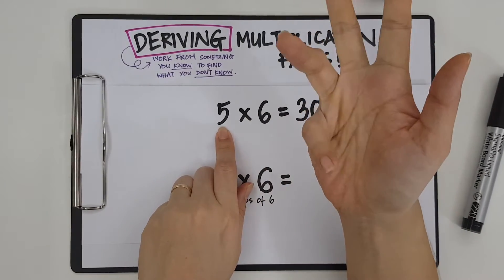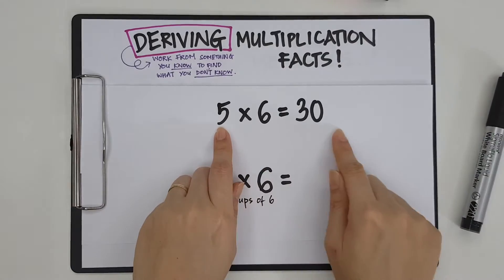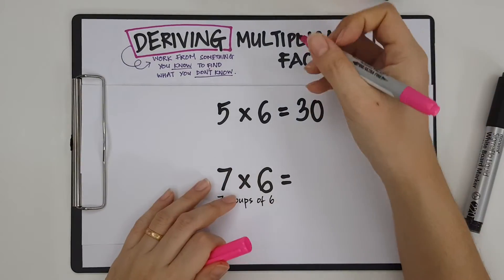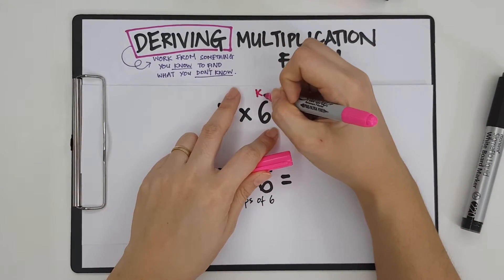5, 10, 15, 20, 25, 30. So this is something that I know. I know this. Let me write it down. I know it.